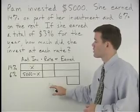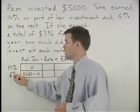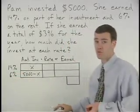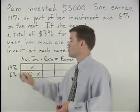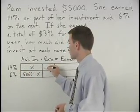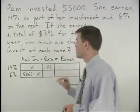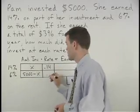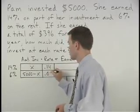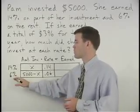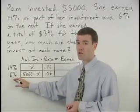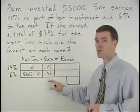For the rate column, we translate our two percentages to decimal form. So 14% becomes 0.14 and 6% becomes 0.06. Remember, 6% means 6 over 100, or 0.06.